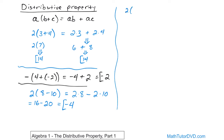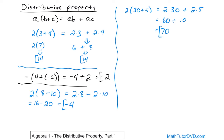Let's do a couple more. What if we have two parentheses thirty plus five? The two gets applied to everything inside. So you have two times thirty, the plus comes from what's already written there, and then two times five. You have to do everything in the proper order of operations, so multiplication comes first. Two times thirty is sixty, and two times five is ten. After all the multiplication is done, you add those together and the answer is seventy. Obviously it's positive because everything was positive to begin with.